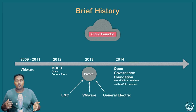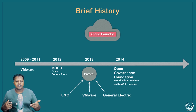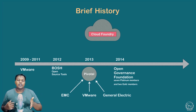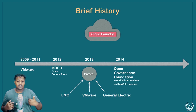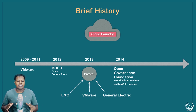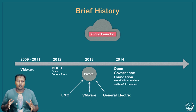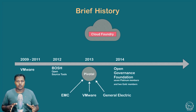Later on, in 2014, the open governance platform was created with seven platinum members and two gold members. They were responsible for contributing to the development of Pivotal and majorly Cloud Foundry, and responsible for introducing features in Cloud Foundry. Basically, they controlled what kind of features would go into Cloud Foundry.